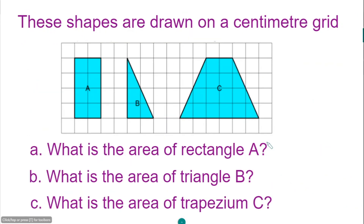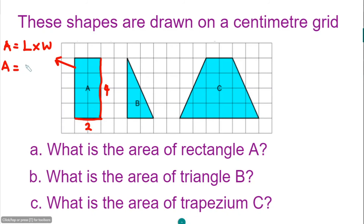Let's see one more example. We have three shapes on the centimetre grid: rectangle A, triangle B, and trapezium C. For rectangle A, the area of a rectangle is length times width. The length is 2 and the width is 4, so the area is 2 times 4, which gives 8 cm squared.